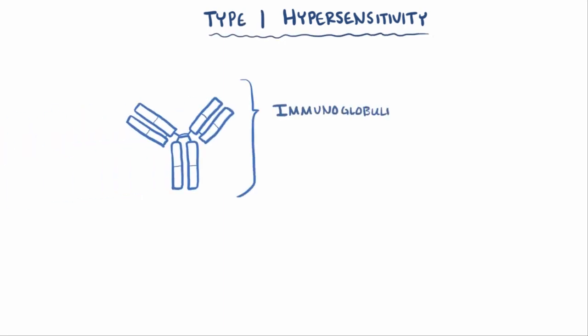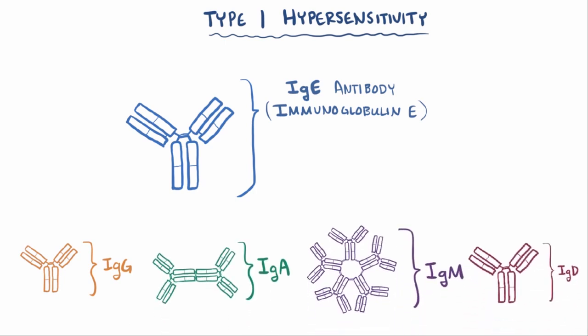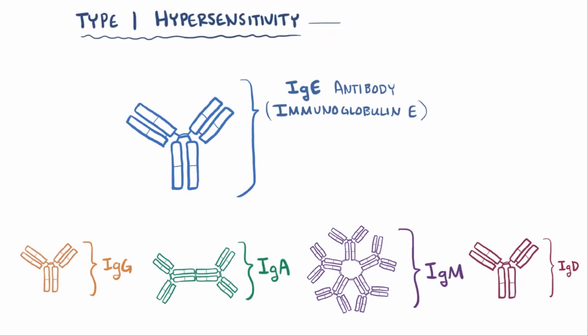There are four different types of hypersensitivities, and in the first type, or Type 1, the reactions rely on immunoglobulin E or IgE antibody, which is a specific type of antibody, the other major ones being IgG, IgA, IgM, and IgD. So because IgE is involved with Type 1 hypersensitivity reactions, they're also called IgE-mediated hypersensitivities.